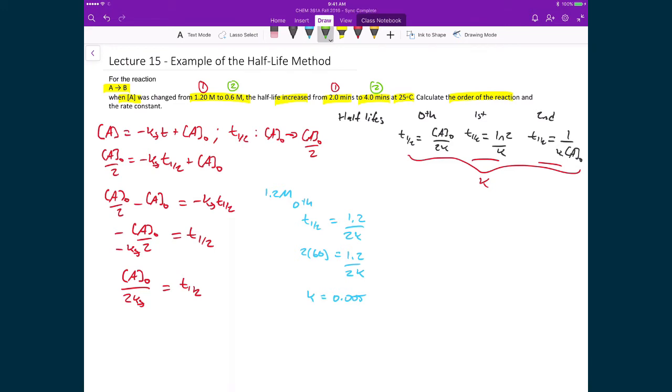If I do this again for the 0.6 molar, again for the 0th order, I have T1/2 equal to 0.6 divided by 2K. I'm going to substitute in my 4 times 60 because now it's 4 minutes, 0.6 over 2K. So my K ends up being equal to 0.00125. Because these two numbers are not the same, we would say this isn't a 0th order reaction.